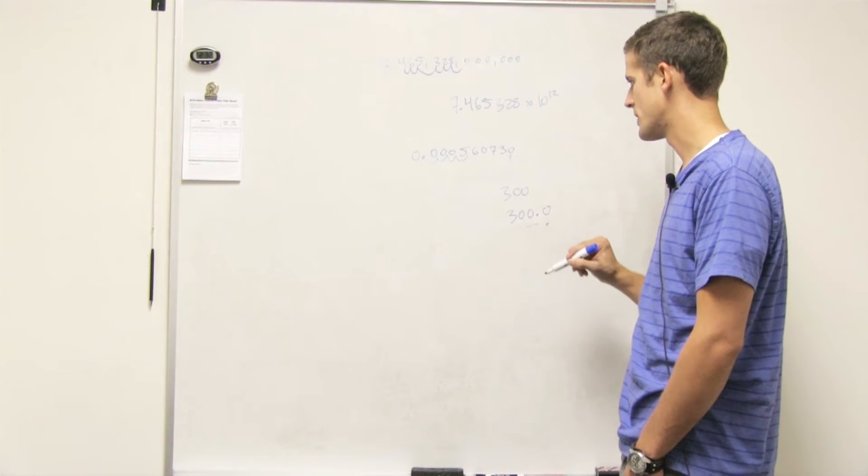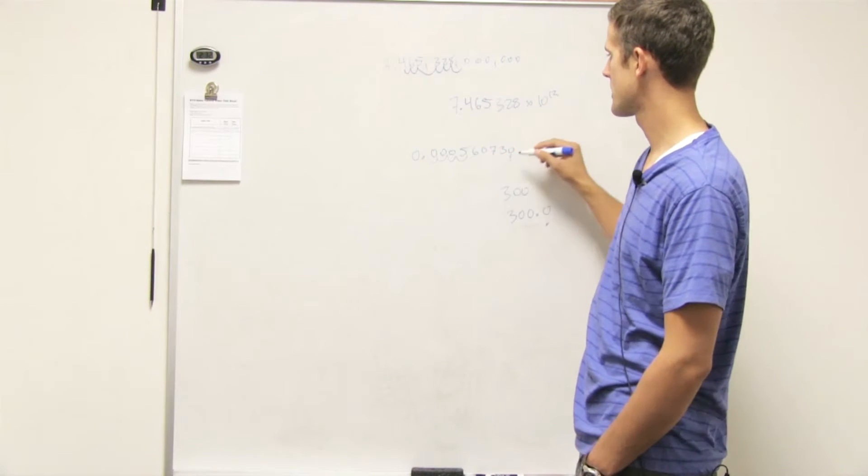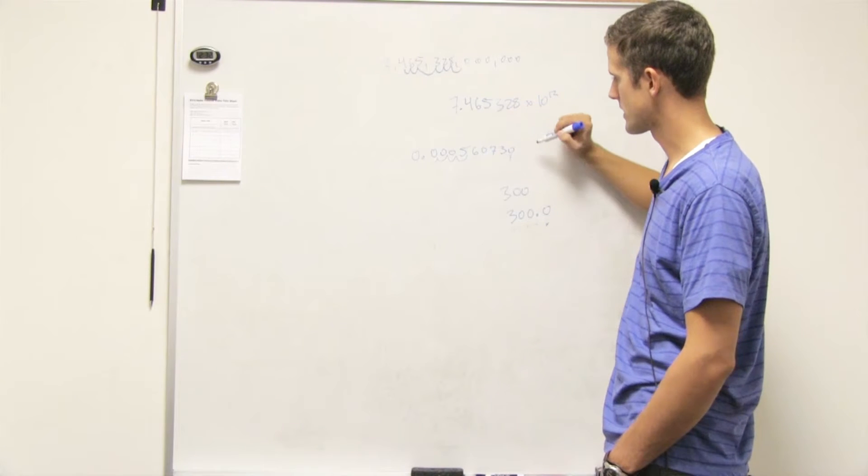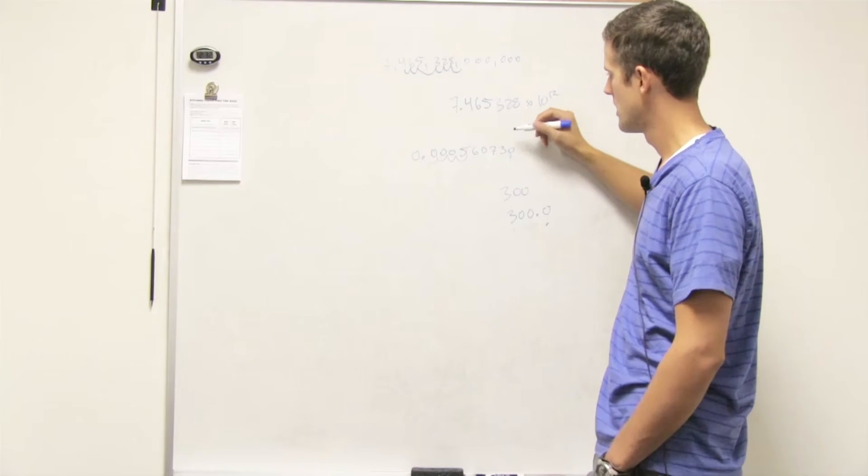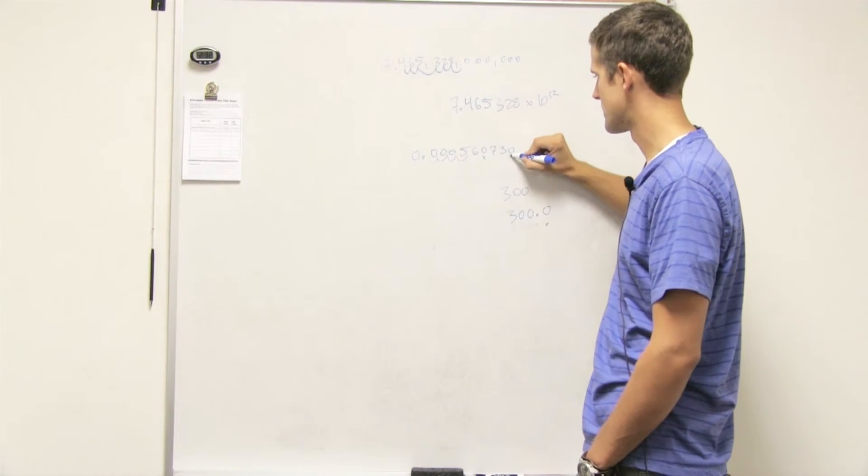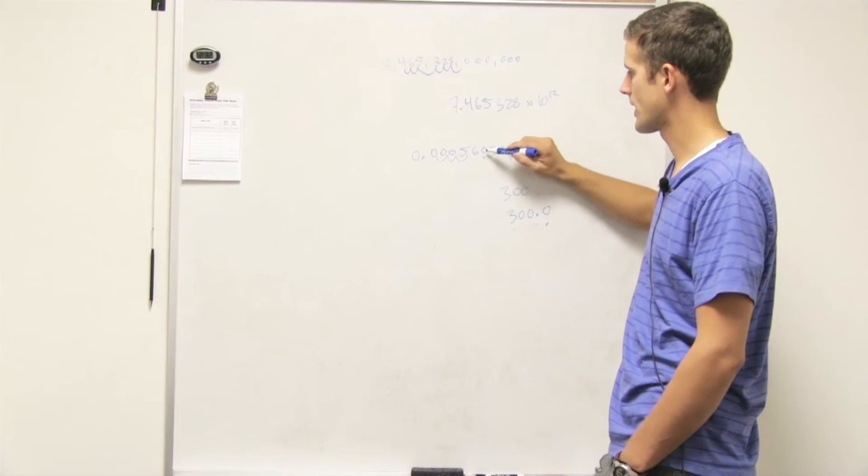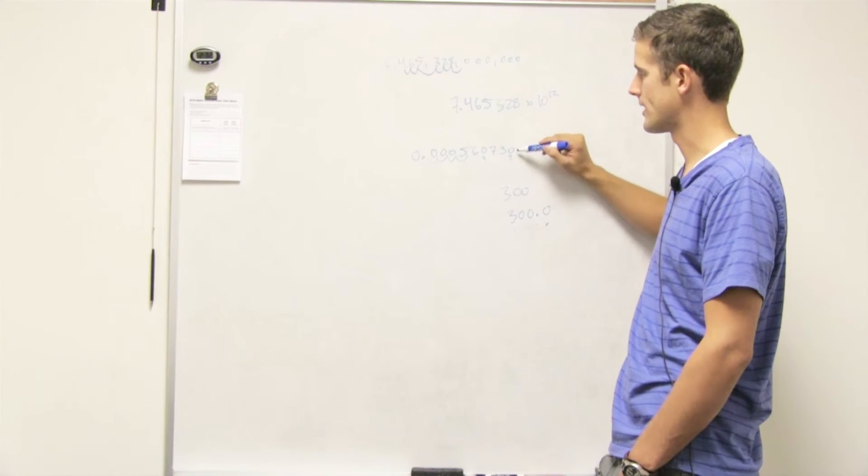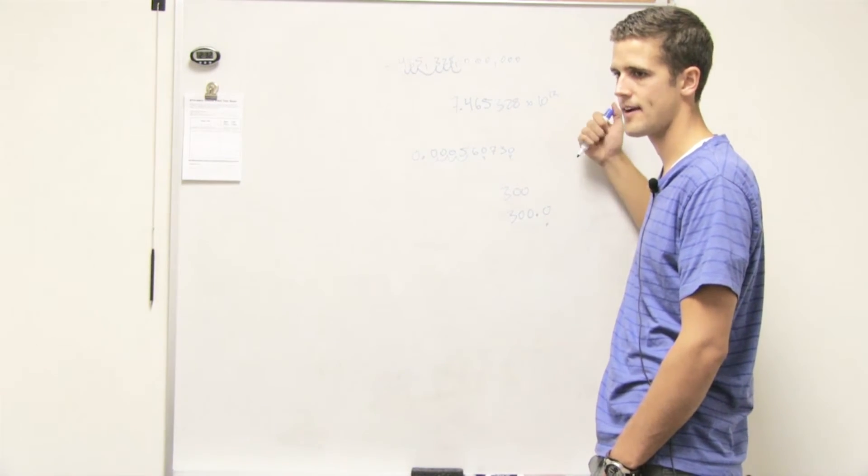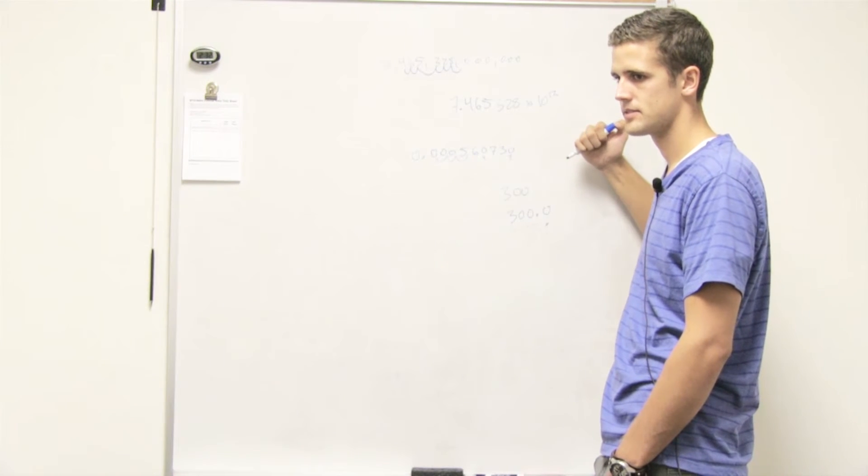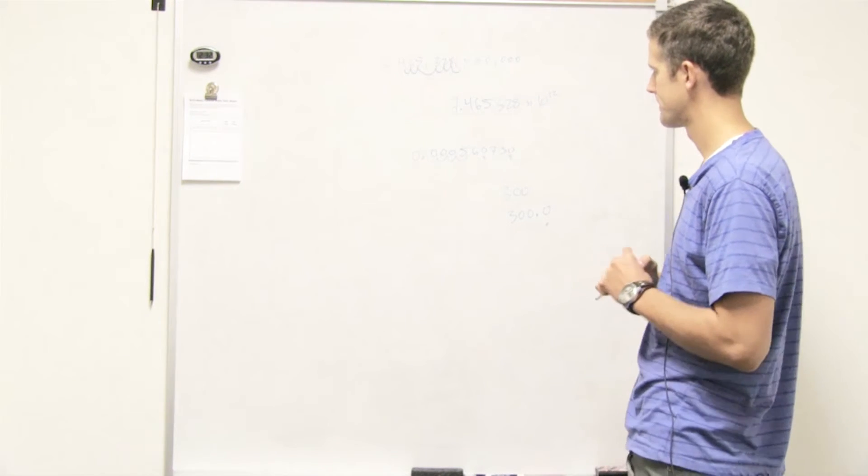And then any zeros in between. So like in this number, we said we have one, two, three, four, five, six significant digits. But we counted this zero and this zero. This zero counts because it's in the middle. This zero counts because it's at the end and it's also to the right of a decimal place.